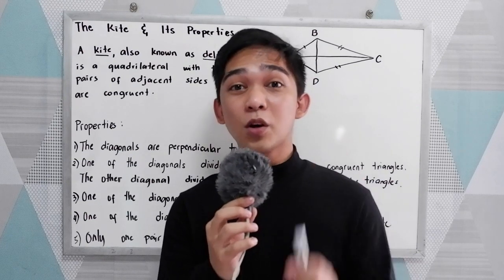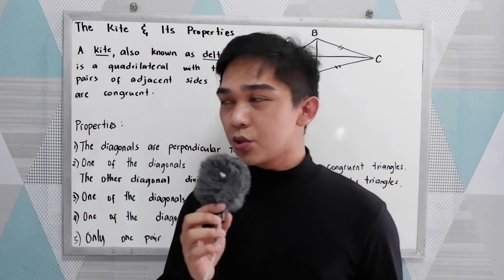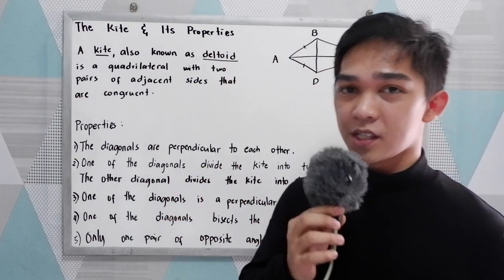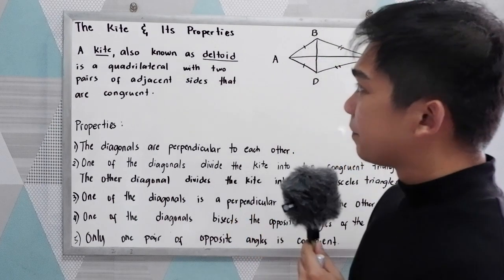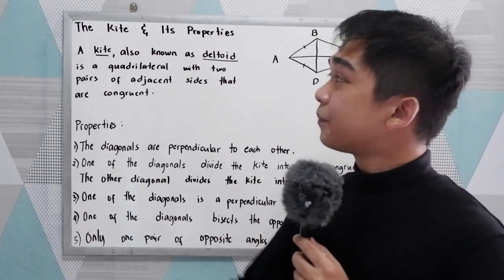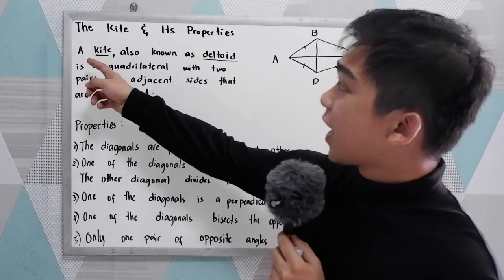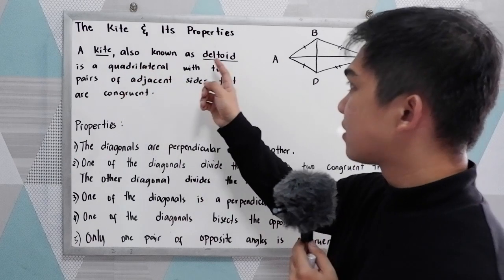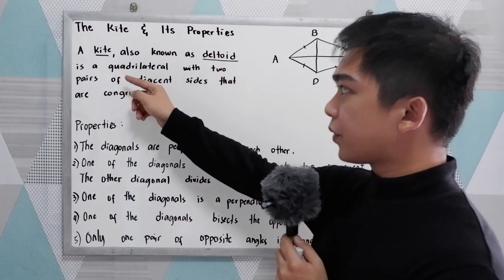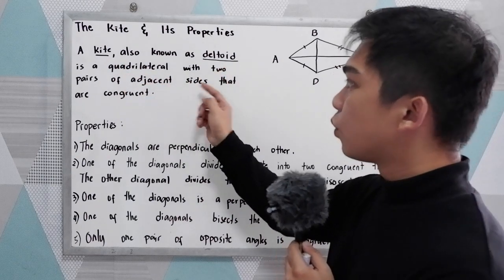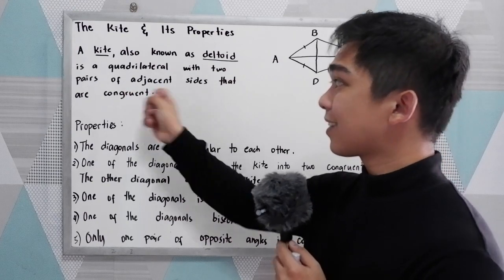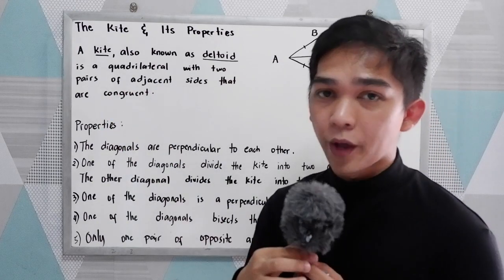Good day everyone. Today I will be discussing to you the kite and its properties. What is a kite? A kite is also known as a deltoid. It is a quadrilateral with two pairs of adjacent sides that are congruent.